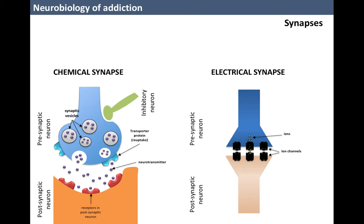Like all cells, neurons have a cellular membrane that seals them from the environment. Thanks to this separation, inside the neuron there is a higher concentration of potassium ions and proteins, while on the outside there are high concentrations of sodium and chlorine.